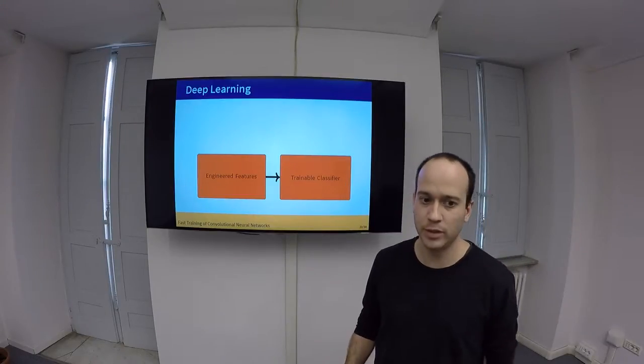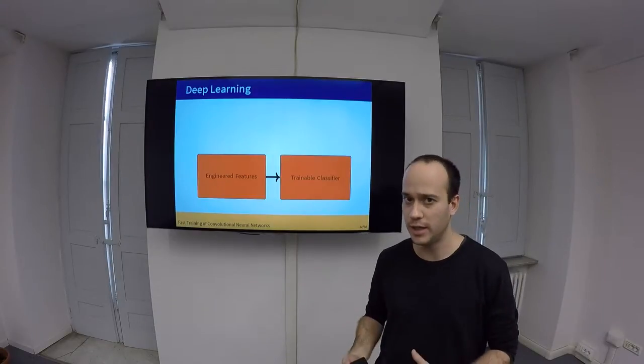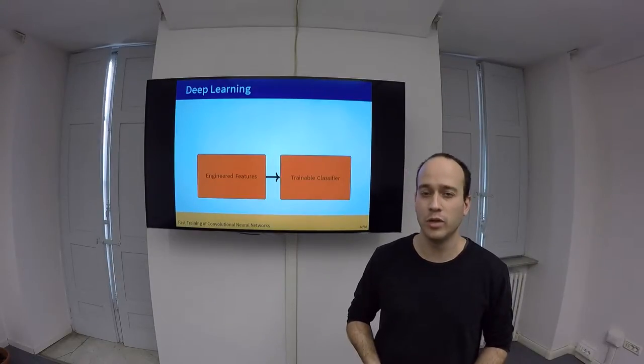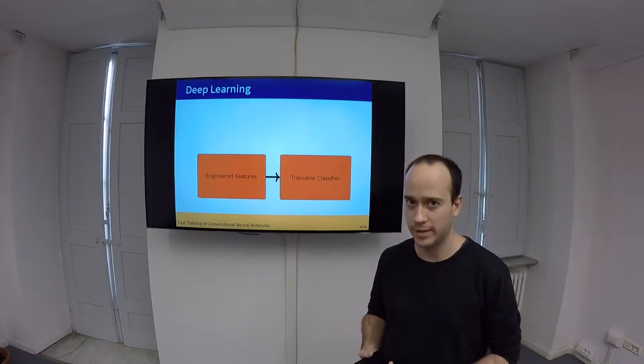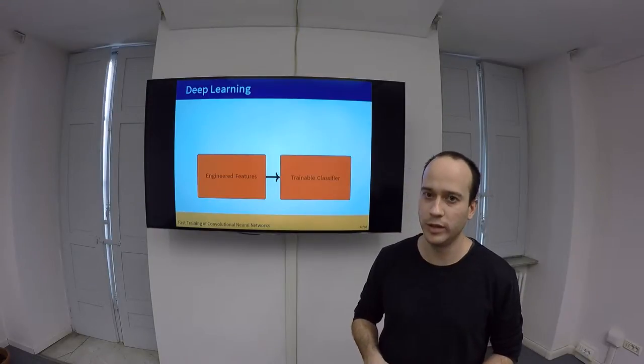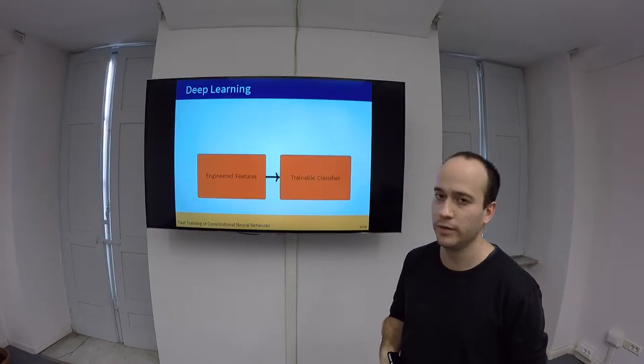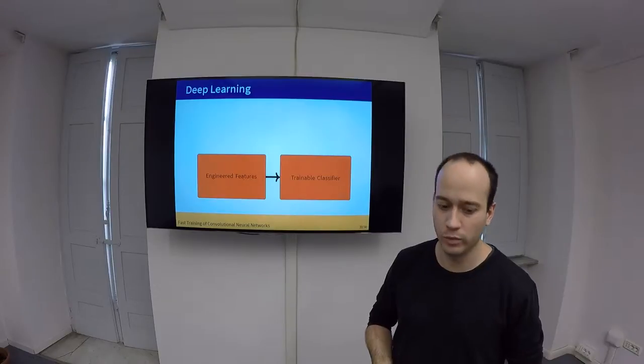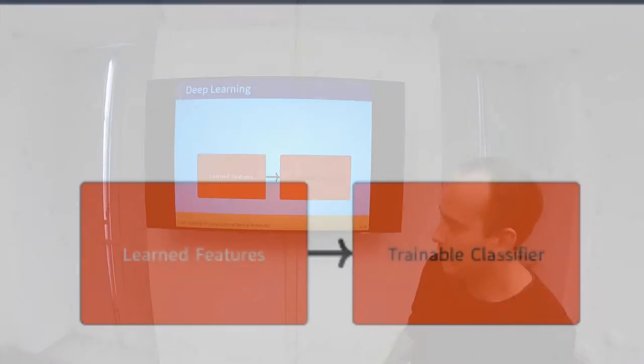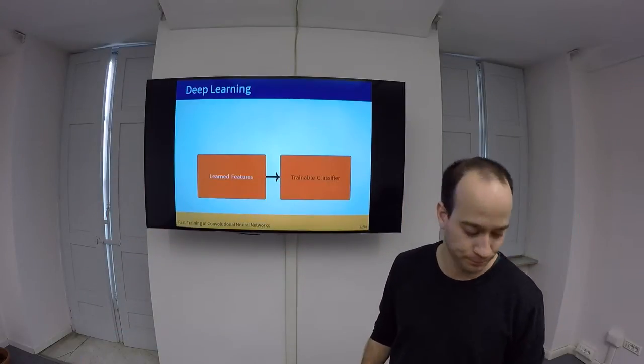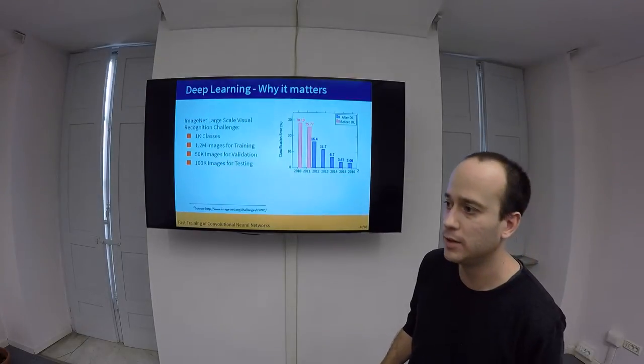Now, with deep learning, what we have is that for each task, we will learn what's important for solving that task. We will not force hand-engineering the features, but we will rather learn these features from data. So, why does deep learning matter? Basically, it gives good results.